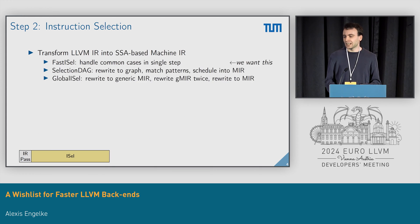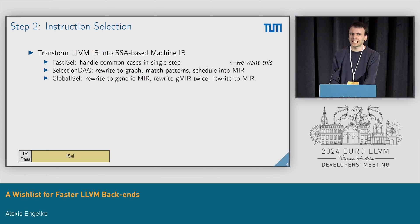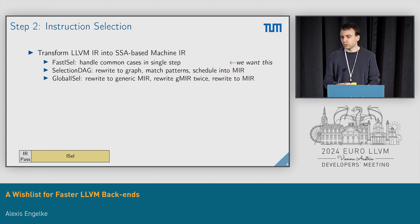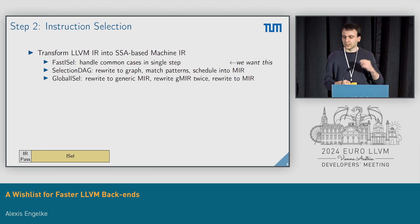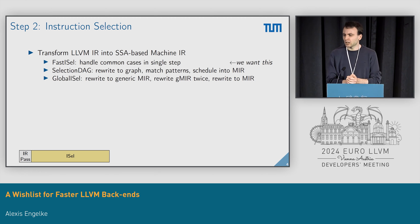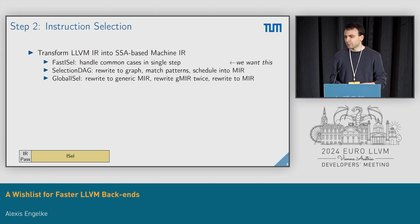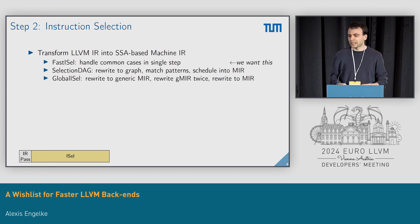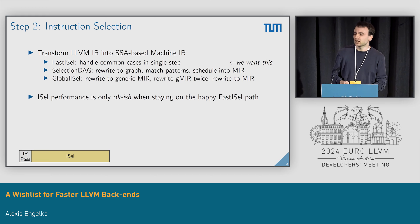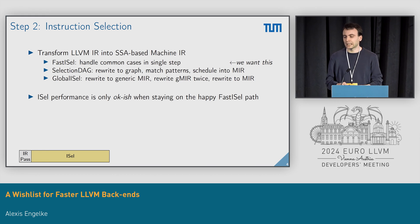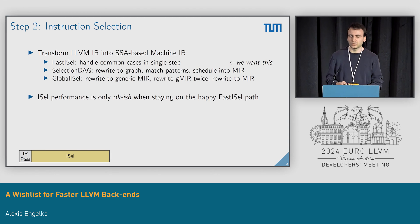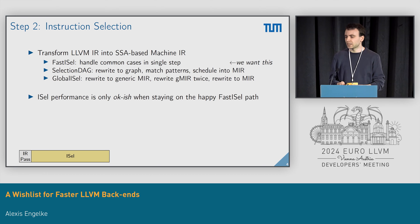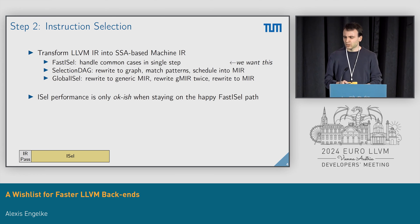The second step is instruction selection, where LLVM IR is transformed into SSA-based machine IR. We have three instruction selectors: FastISel does this in a single step, SelectionDAG does graph-based rewriting, and GlobalISel does rewriting in generic machine IR and rewrites IR multiple times. Instruction selection takes a big chunk — over 30% — and it's only okay-ish if we stay on the happy FastISel path. Whenever we get SelectionDAG fallbacks, performance suffers quite a lot. GlobalISel, considered only on ARM so far, is also around two to three times slower than FastISel, so right now it's not a good replacement.